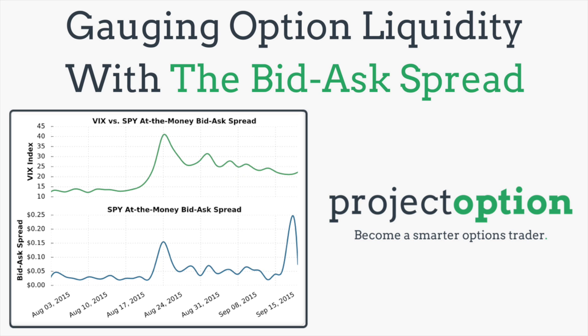Hey everybody, Chris here from Project Option. In this video we're going to talk about gauging option liquidity with the bid-ask spread. The bid-ask spread is extremely important because it represents the hidden costs of entering and exiting positions. You're going to learn what the bid-ask spread is, minimum bid-ask spread values to look for, and how the bid-ask spread changes with the strike price of an option and with market volatility.